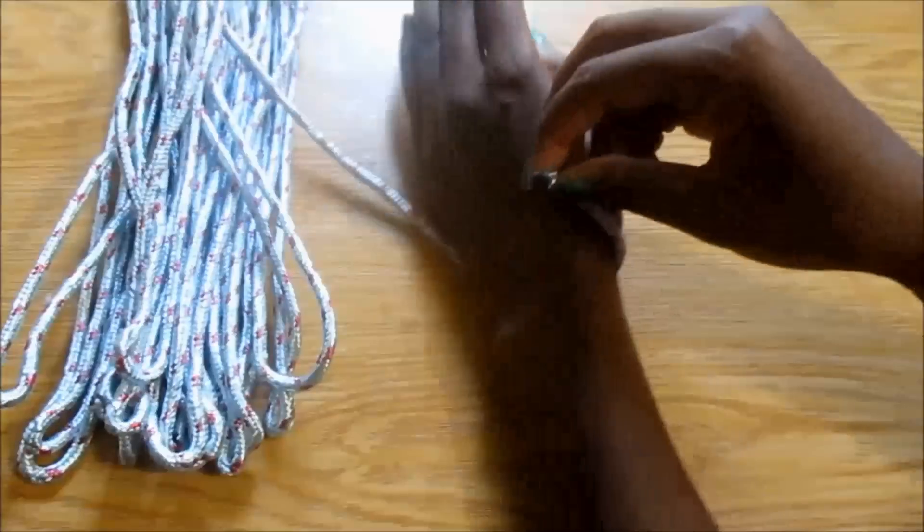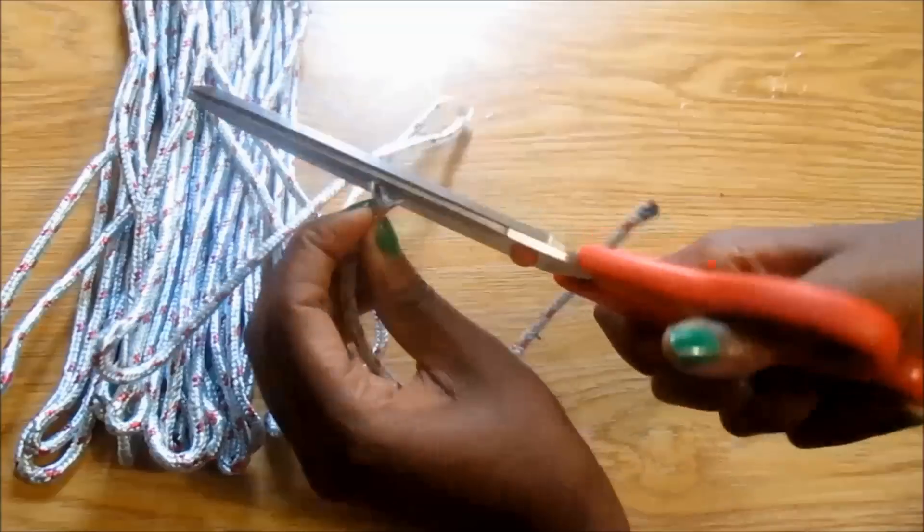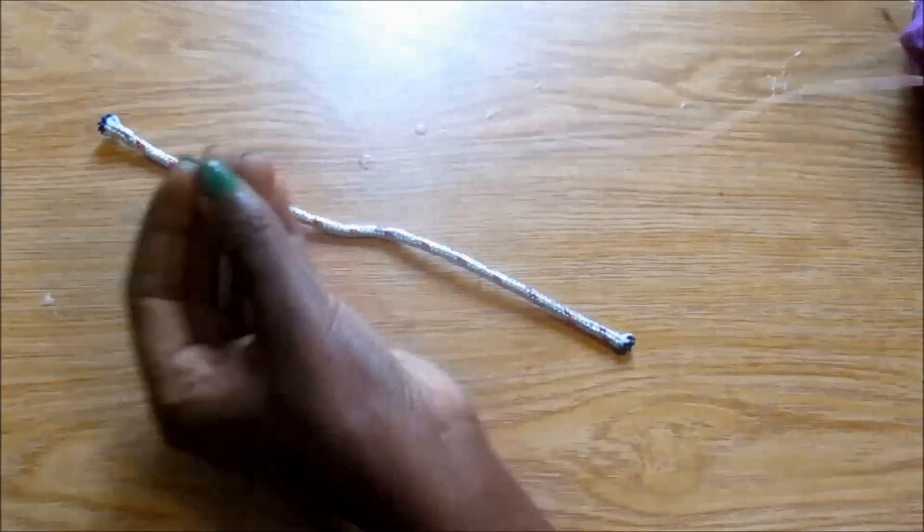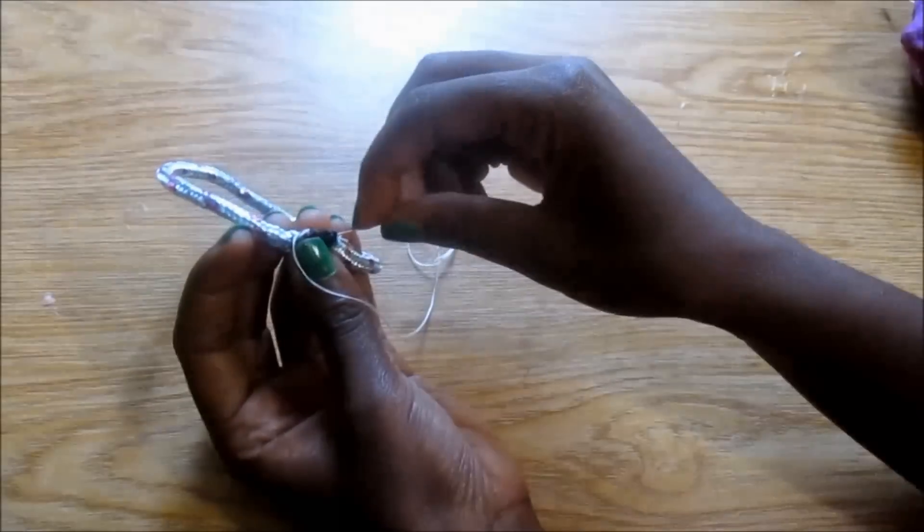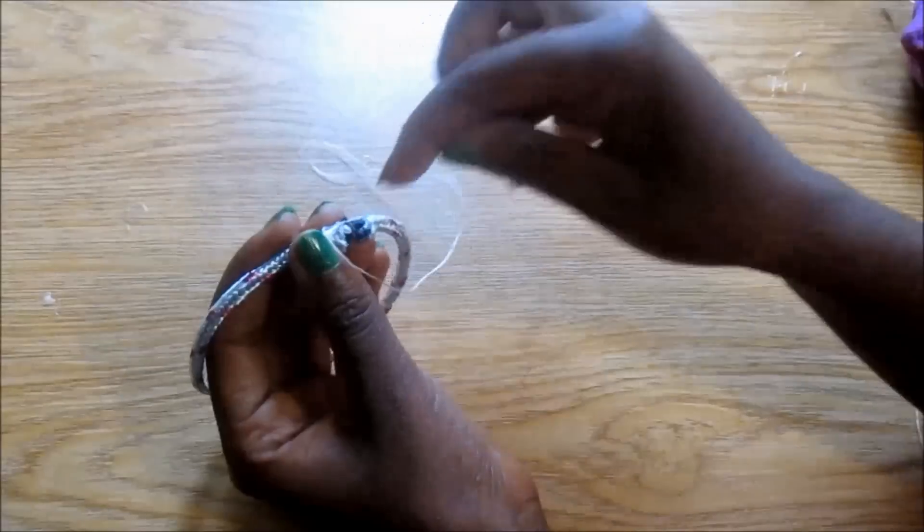The first thing that I do is to measure a piece of rope that is similar to my wrist and also make sure that it was not tight or not too wide for my hand to go through. And then I sewed both ends shut to make it into a circle.